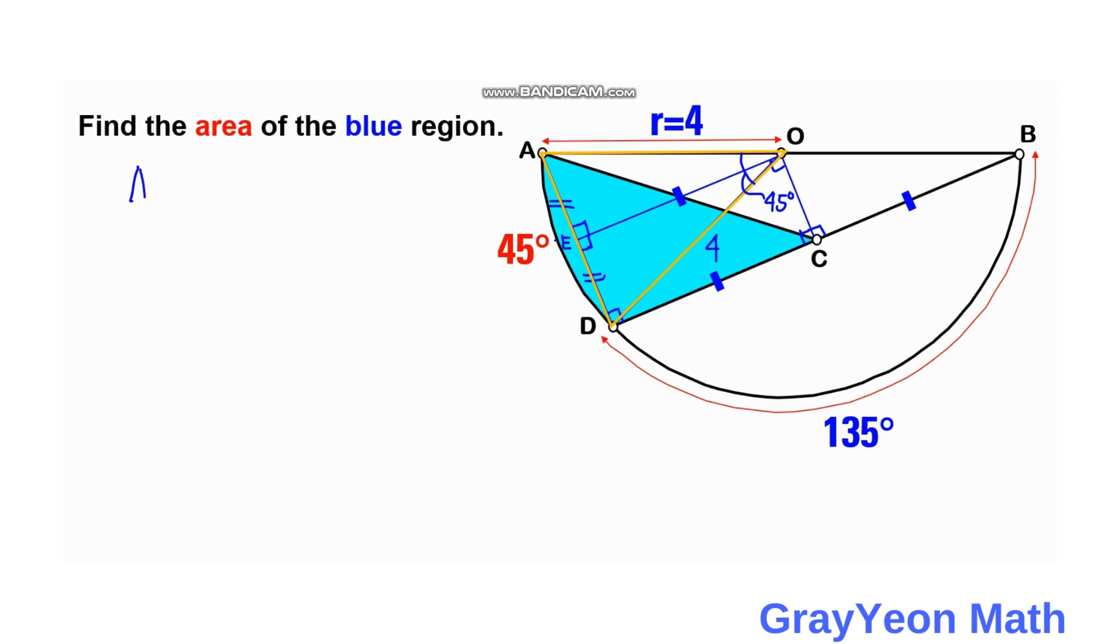The area of the shaded region, the sector, is simply, since this is a semicircle, pi over 2 times R squared times 45 over 180 degrees. Okay, so area of the shaded region equals pi over 2 times R squared which is 4 squared times 45 over 180. So we can divide this actually by 45. So this will be 1 over 4.